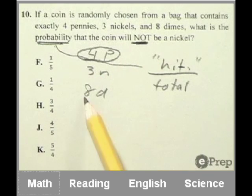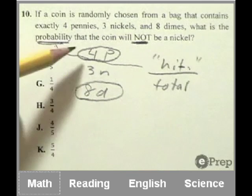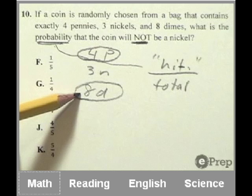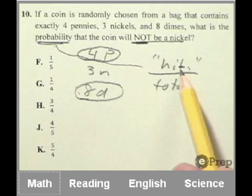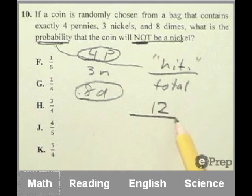The hit is in quotes, it's my little made-up word. The hit is whatever they're asking about, how many of the things are there that they're asking about. So I want not a nickel. Pennies are not nickels, and dimes are not nickels. So of the total coins, there are 4 plus 8, 12 that are not a nickel.